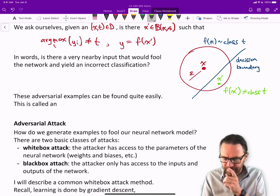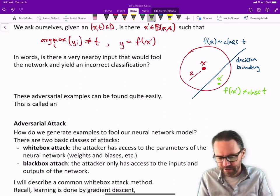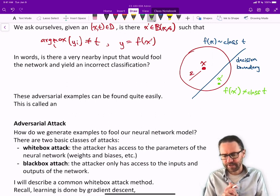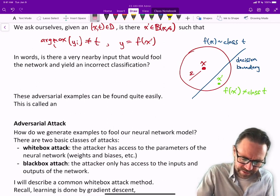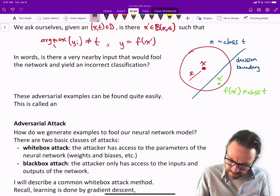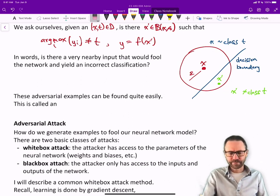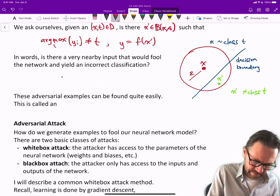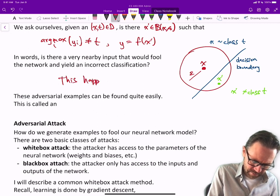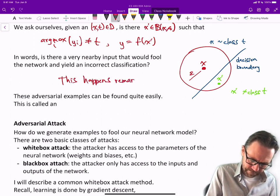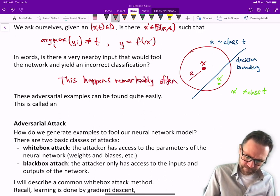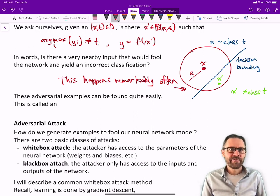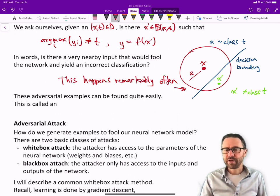X is of class t, x' is not of class t. Amazingly, this happens remarkably often. These adversarial examples can be found quite easily. This is called an adversarial attack.